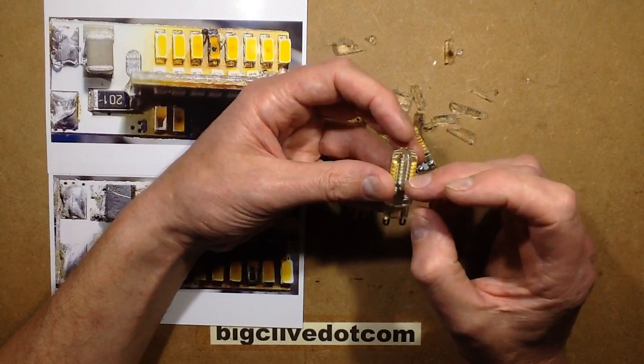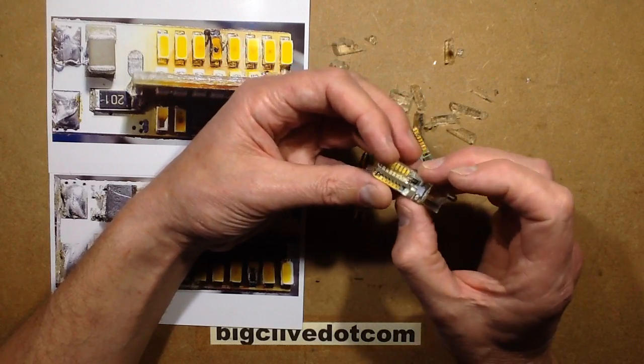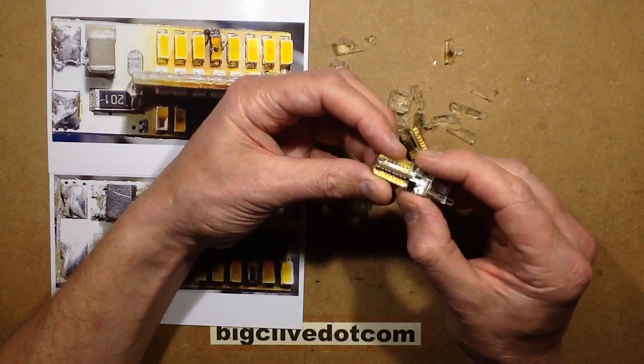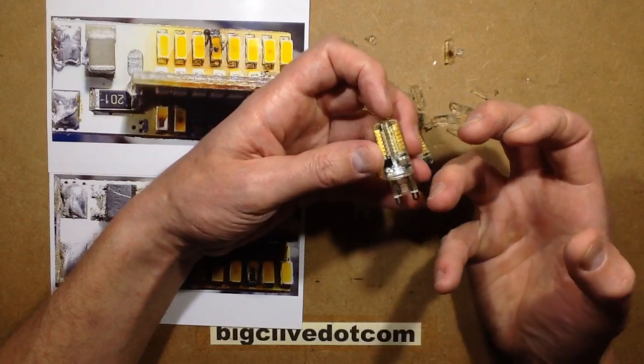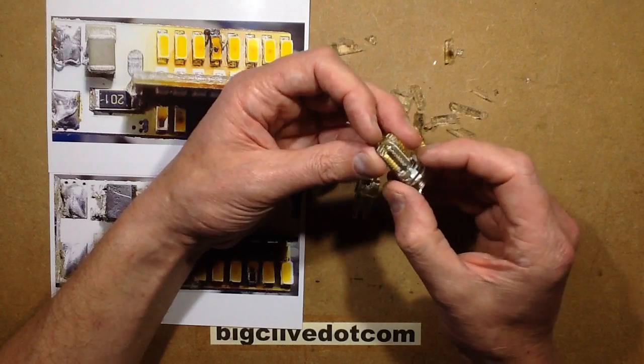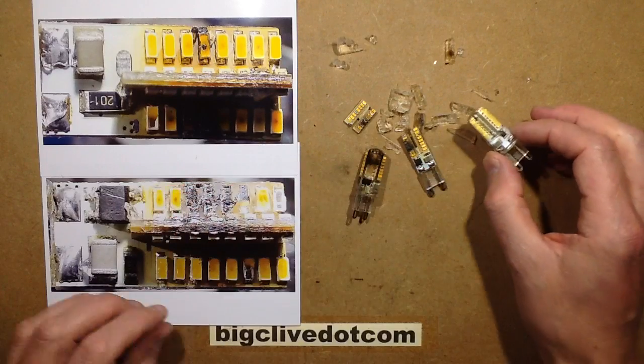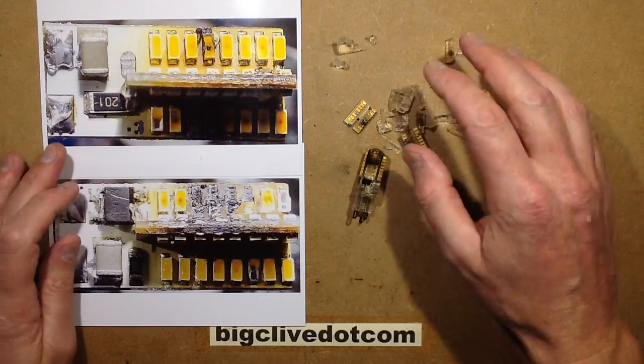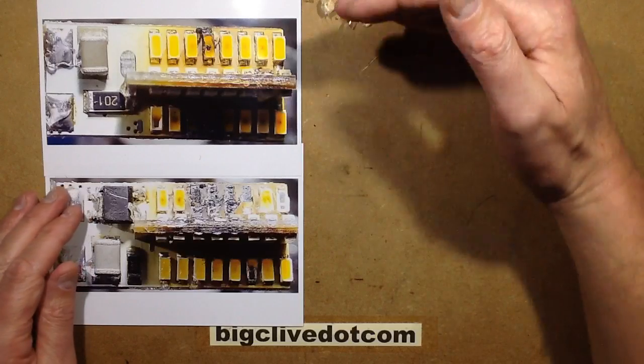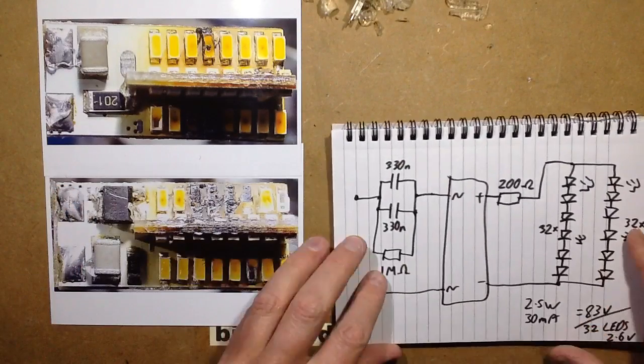That requires a very large string of series LEDs to make almost nearly the full mains voltage. As it heats up, it regulates the current down as it senses the heat build up in the lamp. So these ones use a capacitive dropper though. Let's bring in the notepad because I have doodled it out.